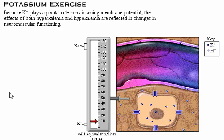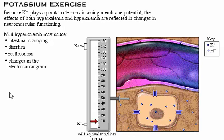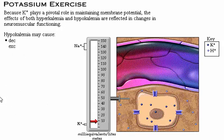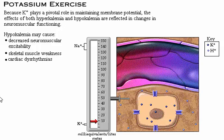Because potassium plays a pivotal role in maintaining membrane potential, the effects of both hyperkalemia and hypokalemia are reflected in changes in neuromuscular functioning. Mild hyperkalemia may cause intestinal cramping, diarrhea, restlessness, and changes in the electrocardiogram. Severe hyperkalemia may cause muscle weakness progressing to paralysis, slowed heart conduction, and cardiac arrest. Hypokalemia causes decreased neuromuscular excitability, skeletal muscle weakness, and cardiac dysrhythmias. If untreated, skeletal muscle weakness may progress to respiratory arrest.